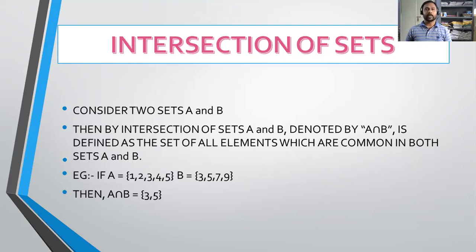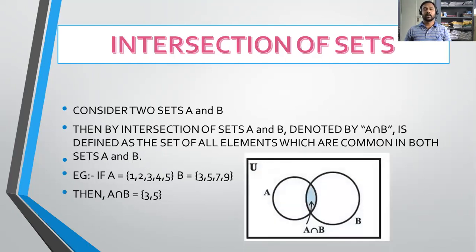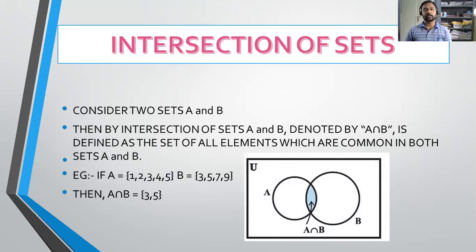How can we represent intersection through a diagram? Here A is one set and B is another set. You can see the common part shared by both A and B — that represents the intersection of A and B. So the two main operations are union and intersection of sets.